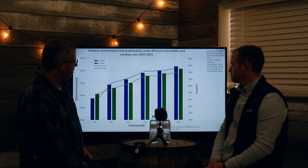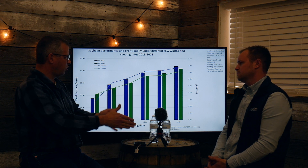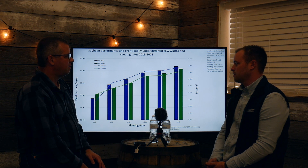It all comes back to profitability. This is a compilation of three years of data across three different locations. When we look at planting rate and row width, we see higher income potential in narrower rows, but we don't see a correlation between row width and population — it's not like 160,000 makes sense in 20-inch rows and 120,000 is best in 30-inch rows. Row width and population are really separate conversations.